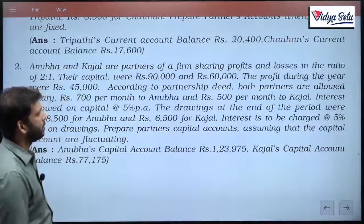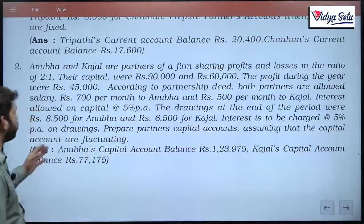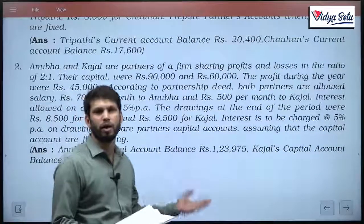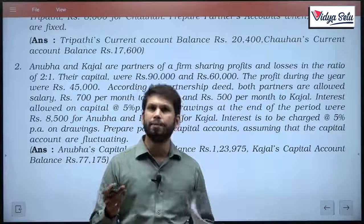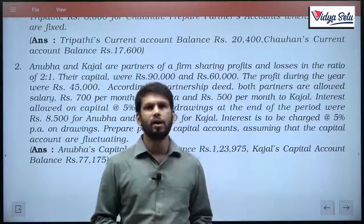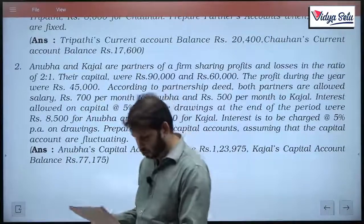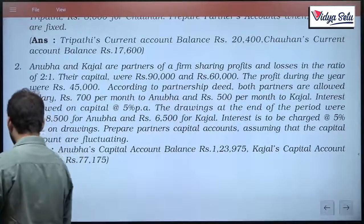And prepare partners capital accounts assuming that capital accounts are fluctuating. Fluctuating is better, only one account we have to make. So what we have to do, we have to make the P&L appropriation account and partners capital accounts. Let us make it.